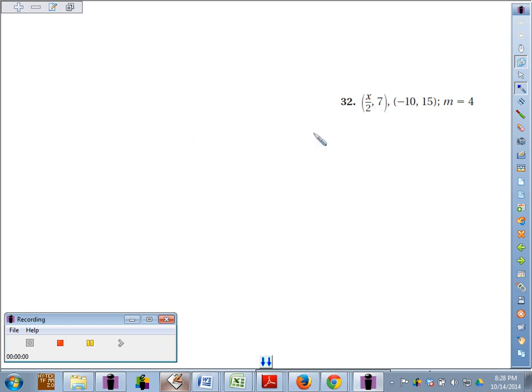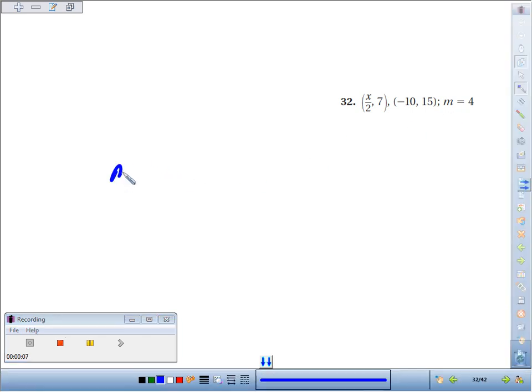We're going to use the given points to find the value of x if we know the slope is 4. To calculate slope of a line, we take y minus y, so in this case we could take 15 minus 7.